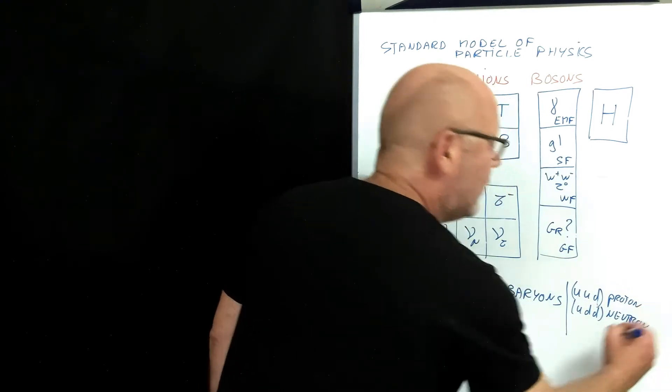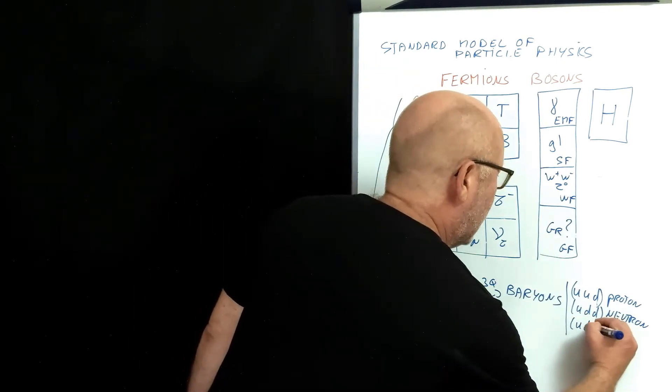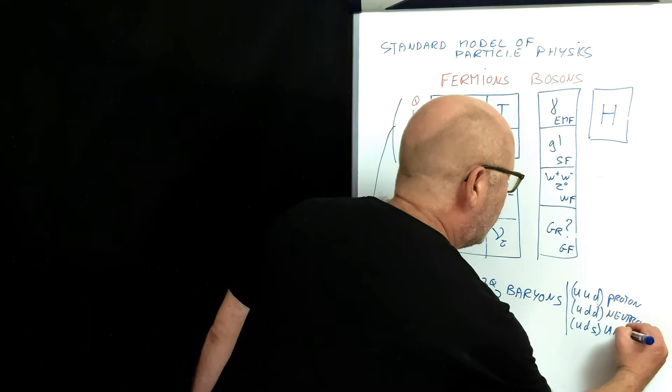But you can have other ones, like, for example, the lambda, which is U, D, S, etc. You've got tons of them.